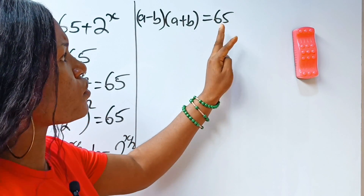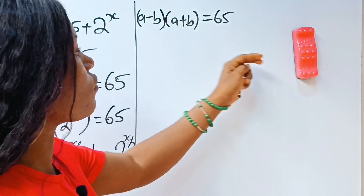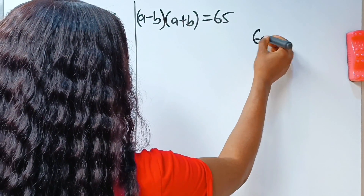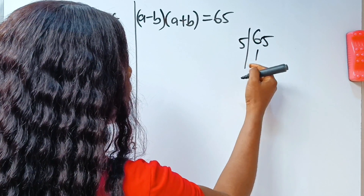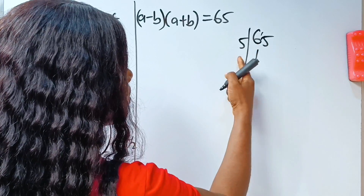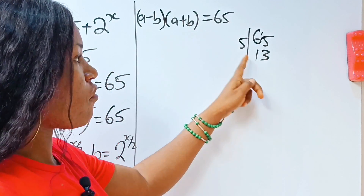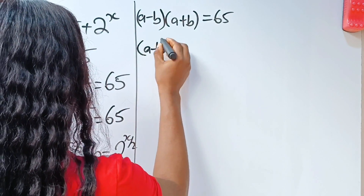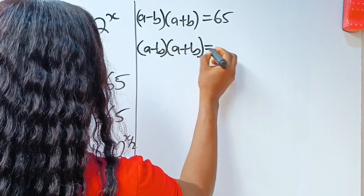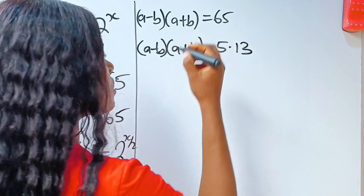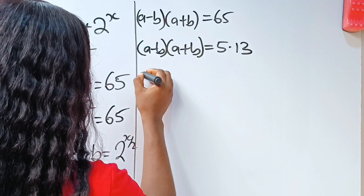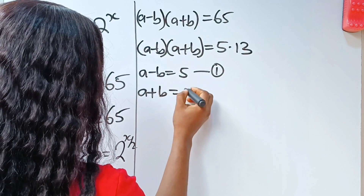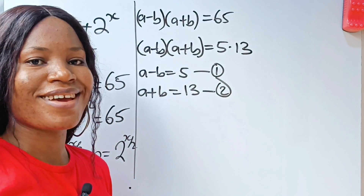Now I need to factorize this — I need two factors that I can equate to this side of the equation. So 65 can be written as 5 multiplied by 13. So we can rewrite this as a minus b multiplied by a plus b is equal to 5 multiplied by 13. We can now say a minus b is equal to 5 — let's call this equation 1 — and a plus b is equal to 13 — let's call this equation 2.